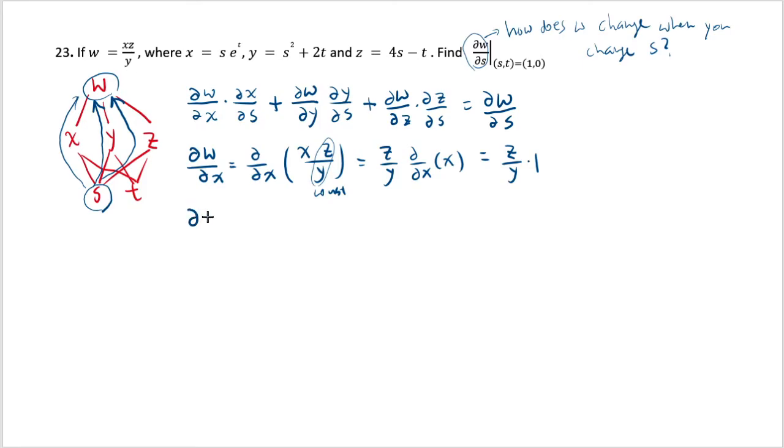And then derivative of w with respect to y, this one, would be the same thing. But this time, xz is considered as a constant. And you're trying to differentiate 1/y, which can be written as y to the negative 1 power. And that one, you can use the power rule to differentiate, which means negative 1 comes down and you have to subtract 1 again. So it's negative 2, which is negative xz/y².